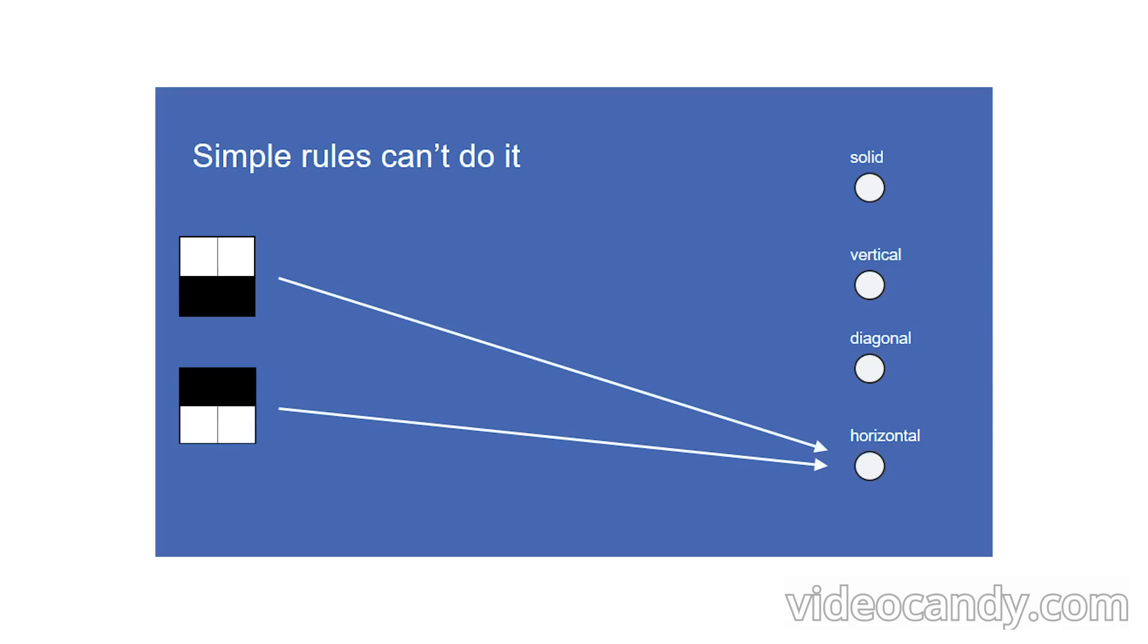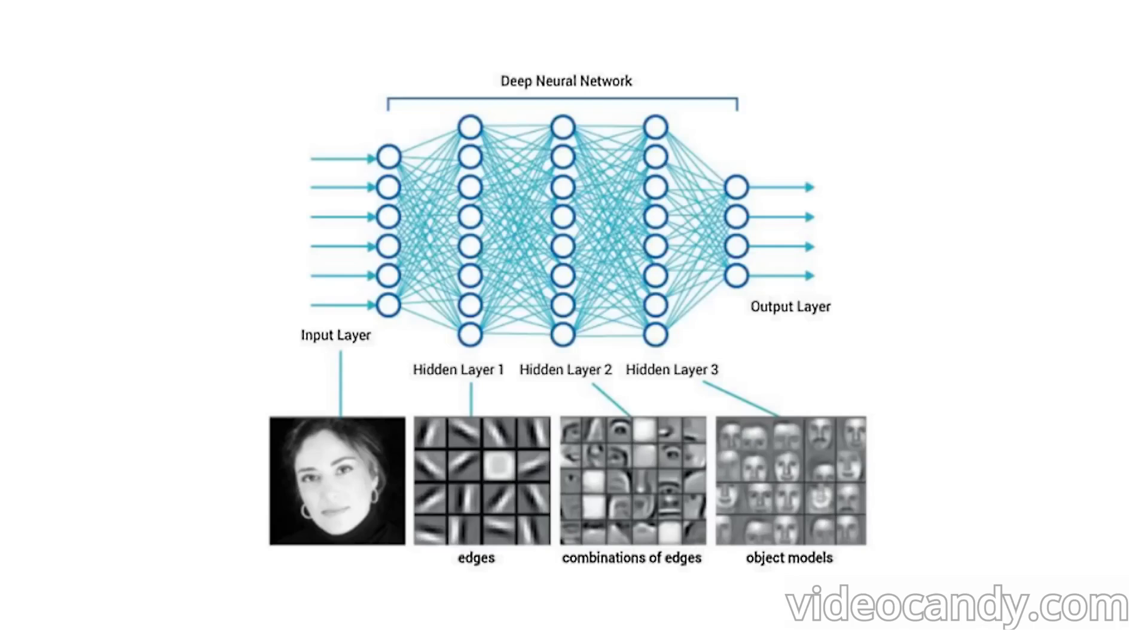This is a much simplified view of what is actually going on, but hopefully this gets the point across. We don't usually know what the hidden features represent, we just train the neural network to predict the final target as well as possible. The hidden features we can design this way are limited in the case of the single hidden layer, but what if we add a layer and have the hidden layer predict another hidden layer? What if we now had even more layers?